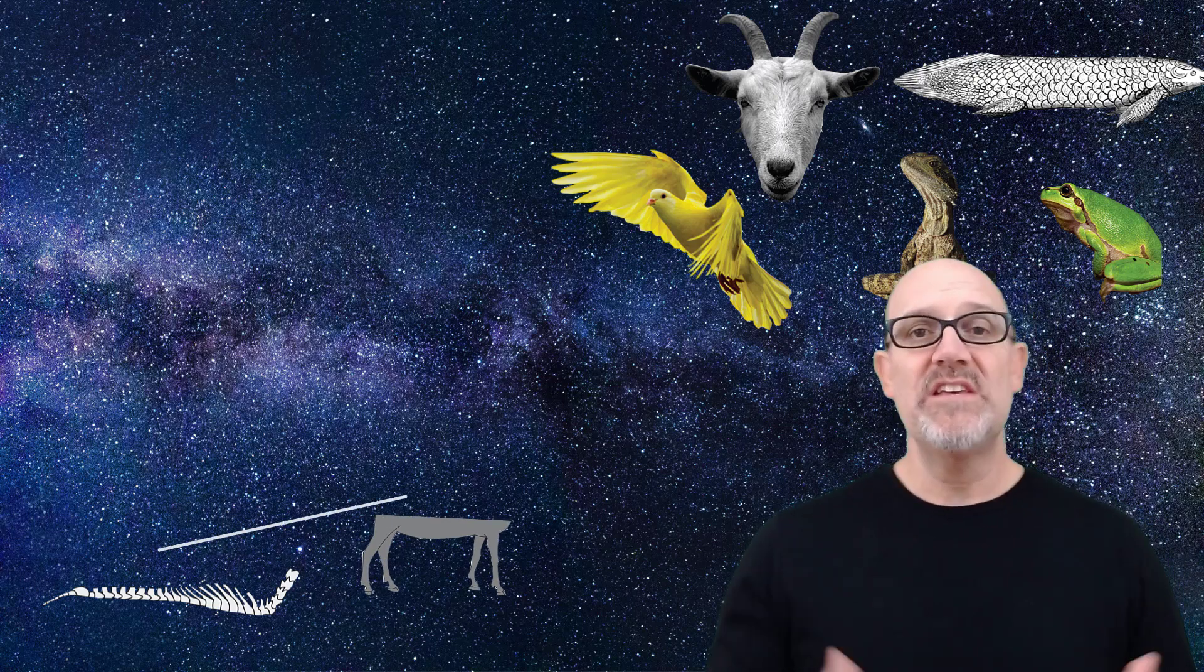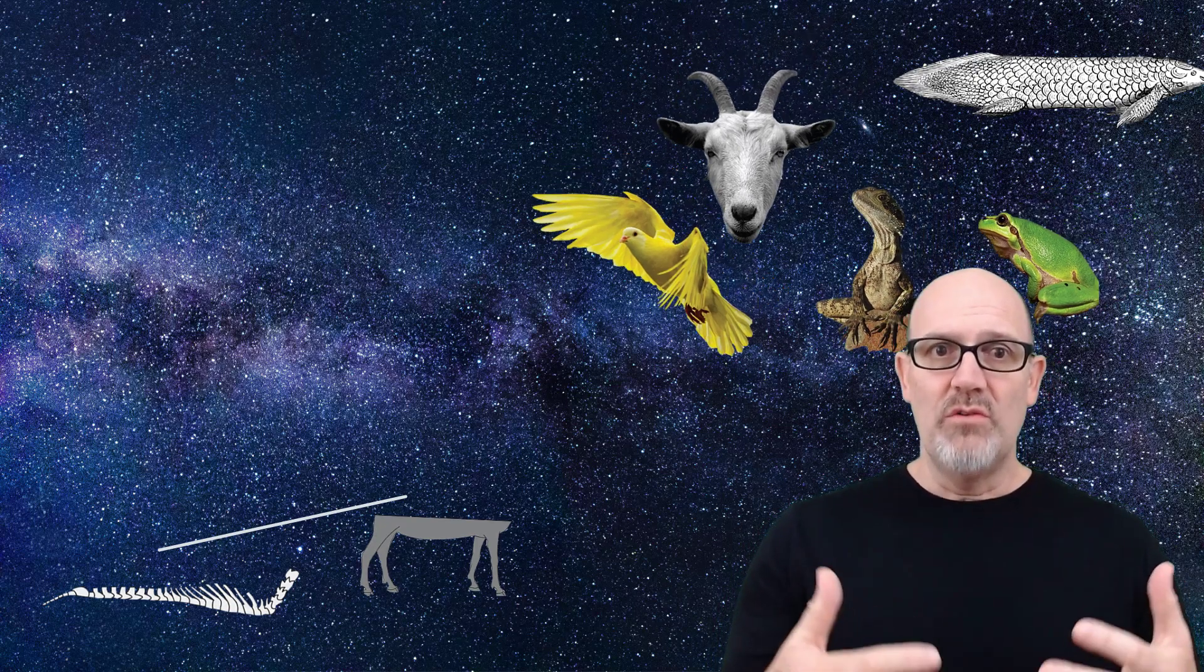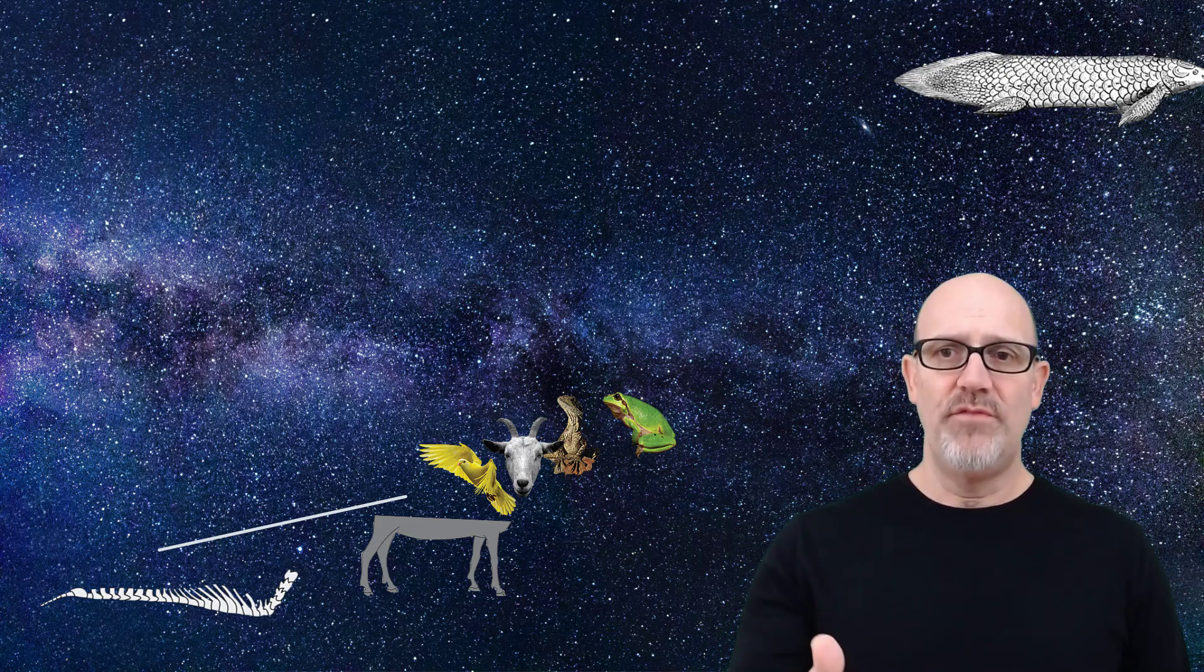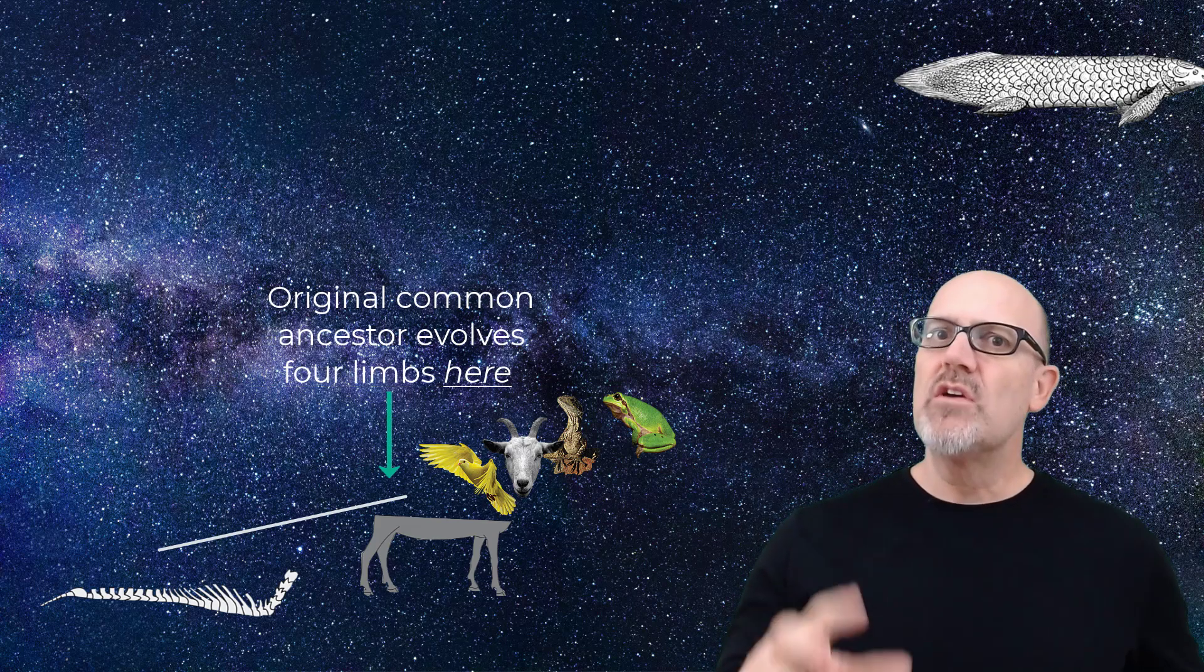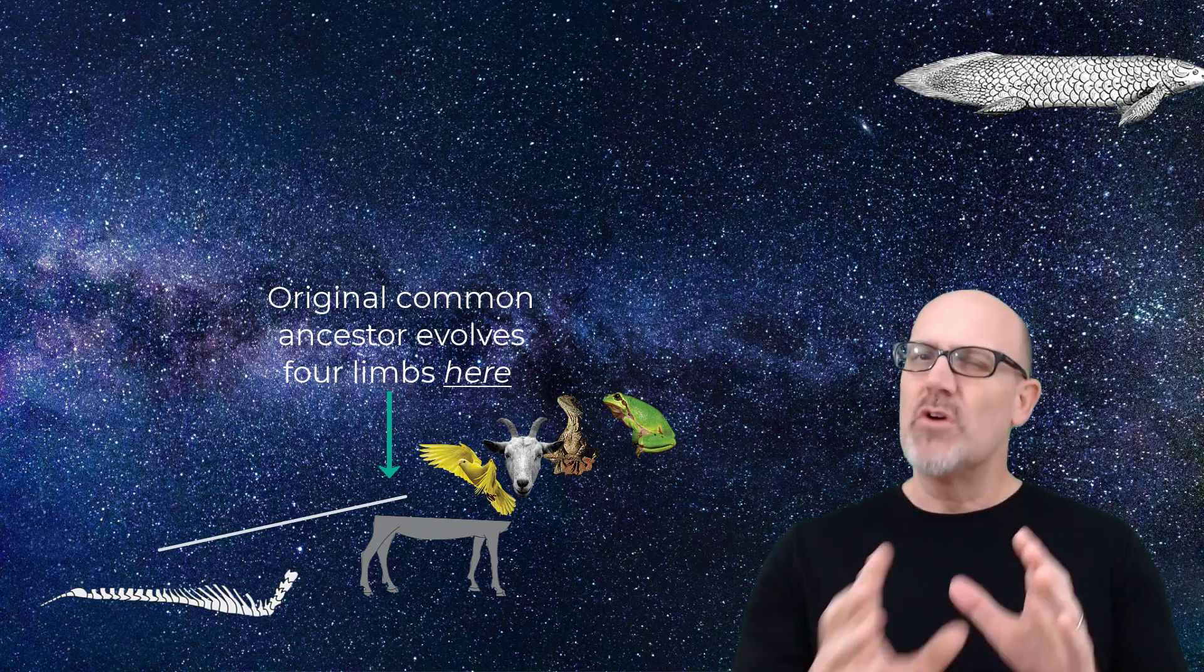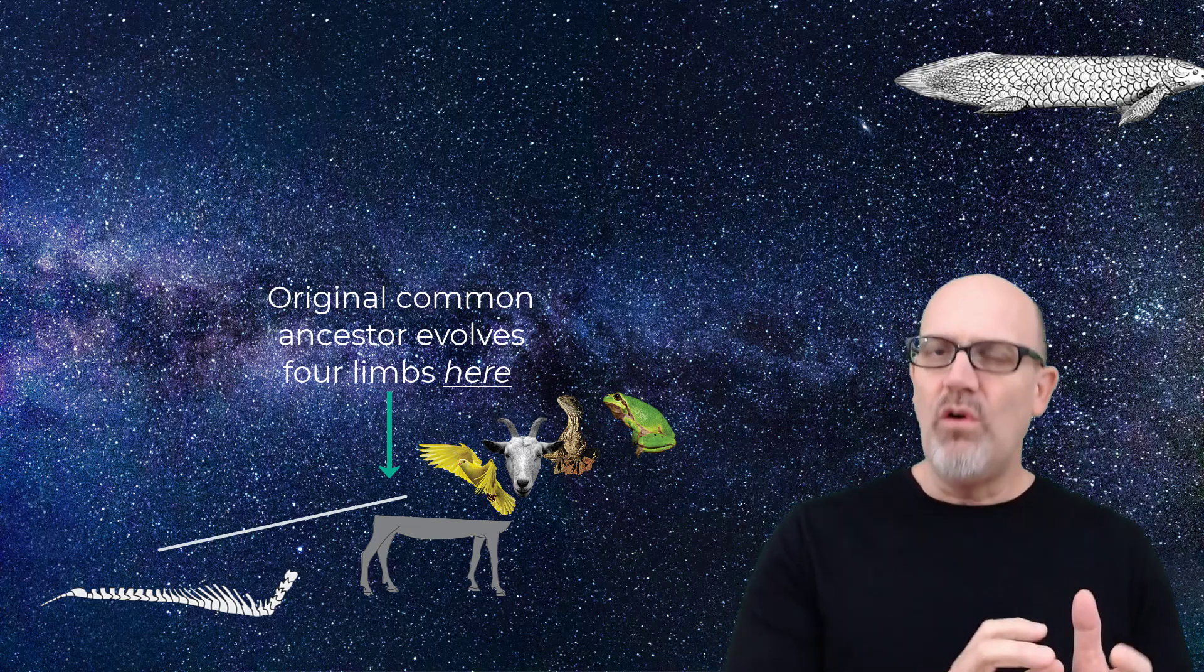Next, we want to look for traits that four of these creatures possess that the fifth one doesn't. In our suite of animals, the trait that sticks out is the possession of four limbs by the goat, the lizard, the frog, and the bird. The fish, although it's got fins, doesn't possess true limbs. From an evolutionary perspective, since all four animals share four limbs, then all of them share a common ancestor with some original group that evolved that trait.